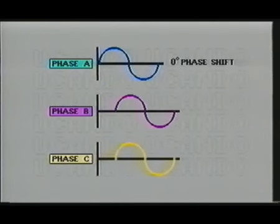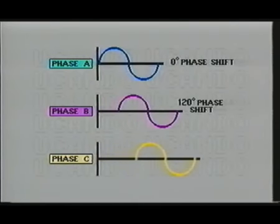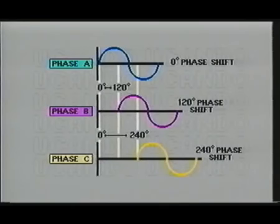Since a complete AC cycle consists of 360 degrees, and we need an equal separation between the three AC signals, we will need to separate them 120 degrees from one another.